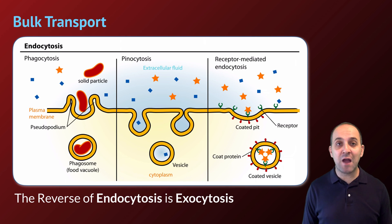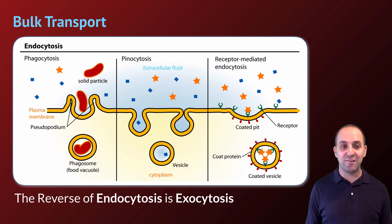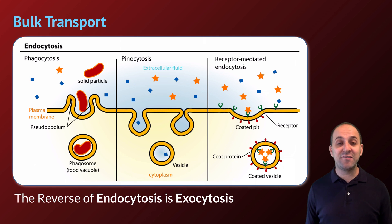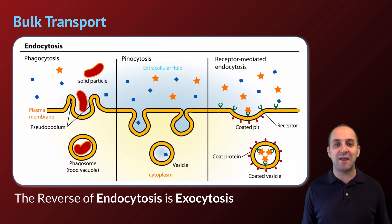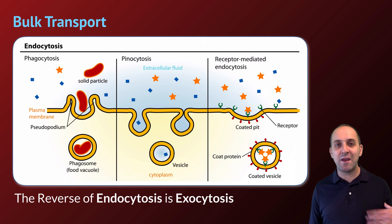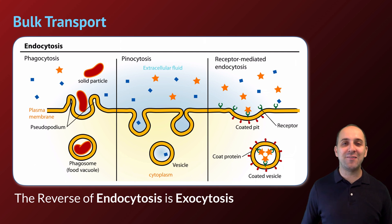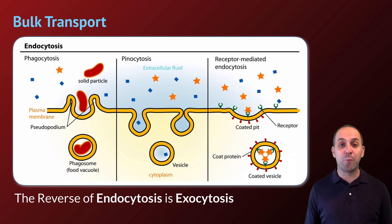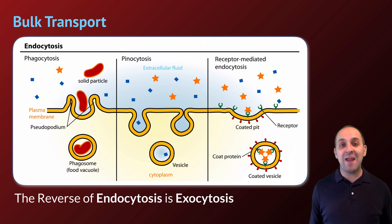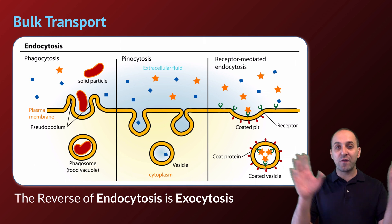Let's end with a brief conversation about bulk transport. Bulk transport refers to the movement of large amounts of substances into or out of the cell. This does not happen across the cell membrane directly; instead, the cell membrane surrounds the substance and brings it into the cell enclosed in a compartment called a vesicle — this process is endocytosis. Cells also have a process by which they can export large molecules, which basically looks like endocytosis in reverse: exocytosis. In exocytosis, a vesicle containing whatever the cell wants to secrete will fuse with the plasma membrane and export the contents out of the cell.